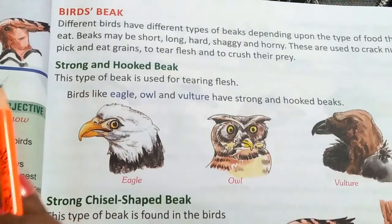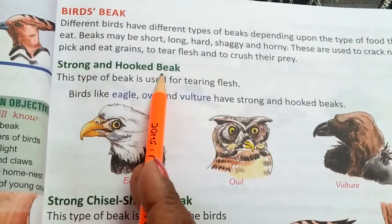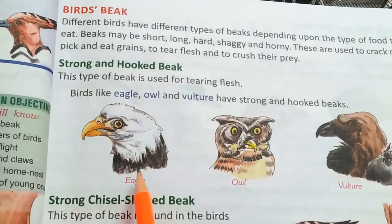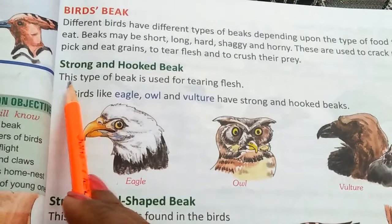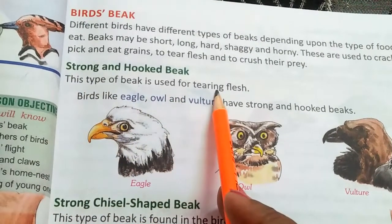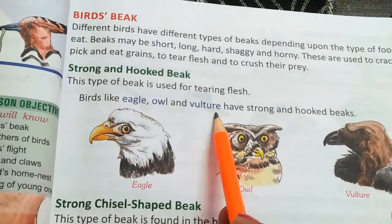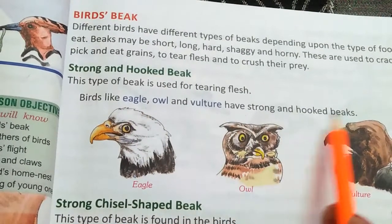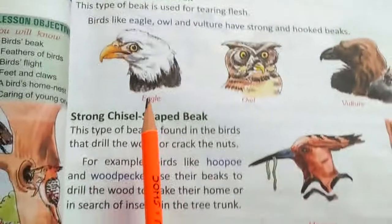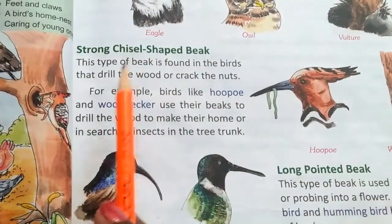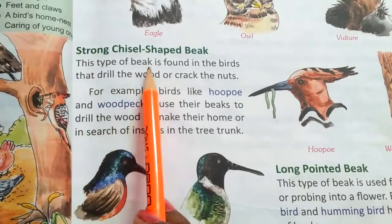The first type is the strong and hooked beak. You can see this type of beak in eagles, owls, and vultures. This type of beak is used for tearing flesh. Birds like the eagle, owl, and vulture have a strong and hooked beak and use it to tear flesh.